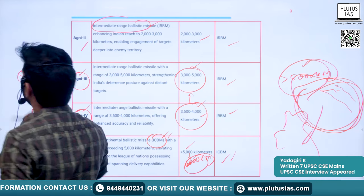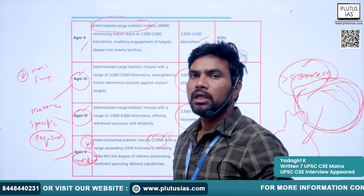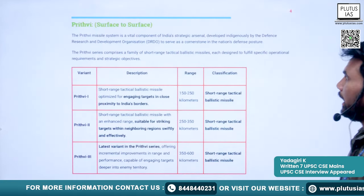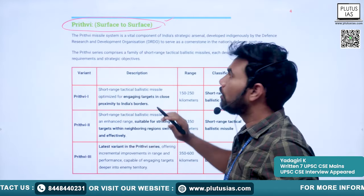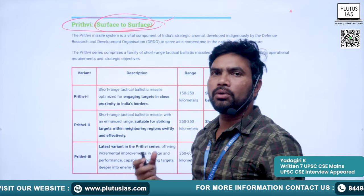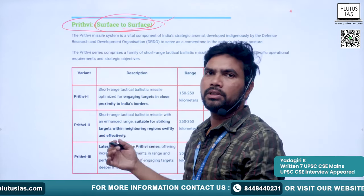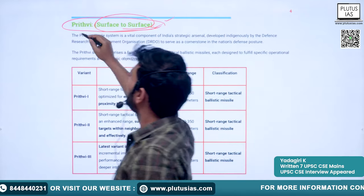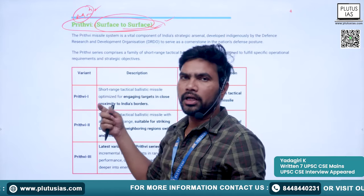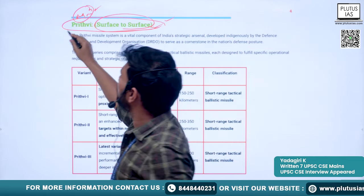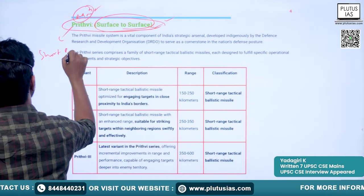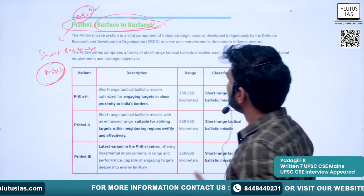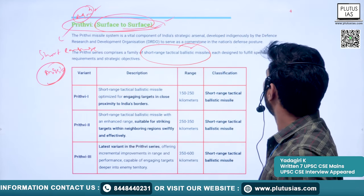Questions in examinations have mostly been asked from the Agni series. Next is the Prithvi series, also a surface-to-surface missile system. While Agni covers intermediate to long range, Prithvi is predominantly a short-range missile system — well known as a short-range tactical ballistic missile system.